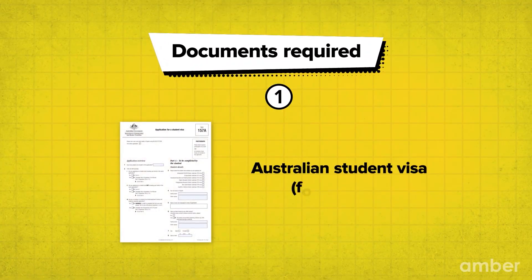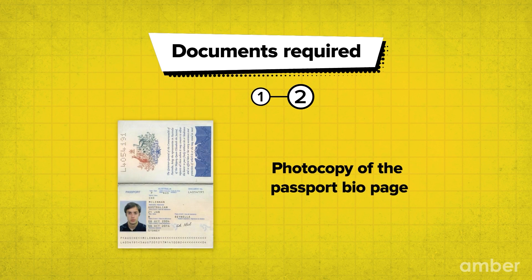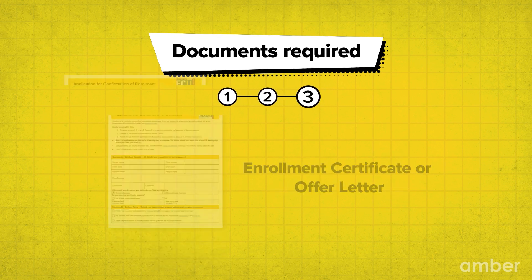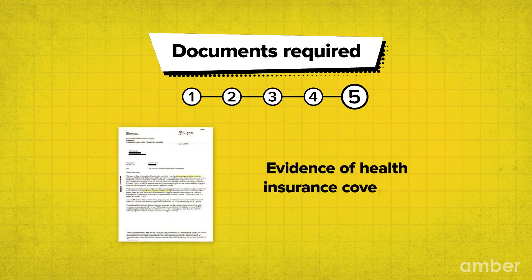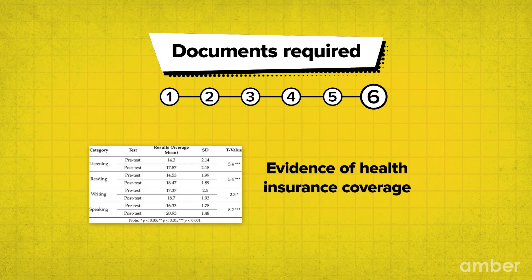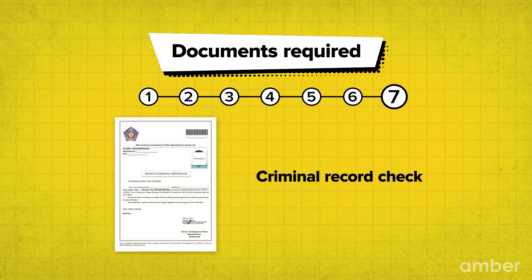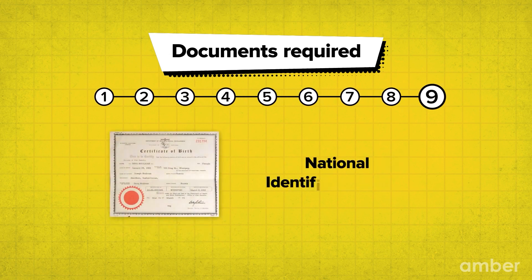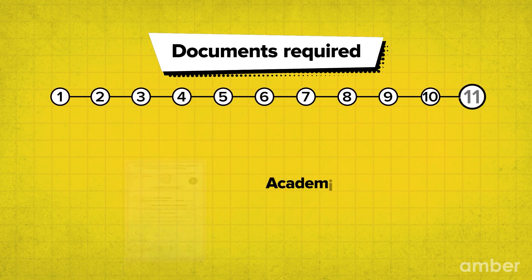Getting a student visa will mean quite a bit of paperwork. For the Australian student visa, you will need a host of documents. These include: a filled-out application form 157A, which you can find on the official website or download as a PDF; a photocopy of the passport bio page; an enrolment certificate or offer letter; proof of sufficient funds; evidence of health insurance coverage; results of an English proficiency exam; a criminal record check; four passport-size photographs; a national identification card; a GTE statement; and academic records.